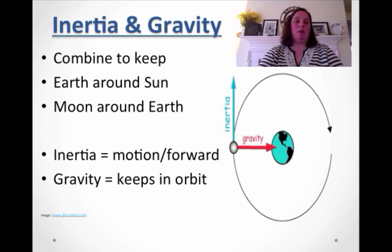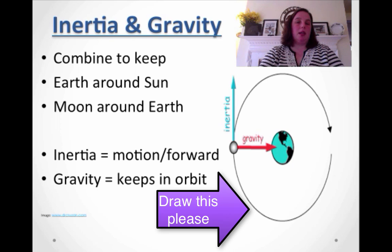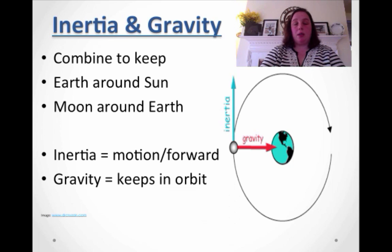So let's talk about inertia and gravity, and if you would for me, please draw this diagram. So inertia and gravity combine to keep the Earth around the sun, and it also combines to keep the moon around the Earth. Inertia, as you know, object in motion stays in motion, means to go forward, so that's the blue line you see here. And it's gravity that keeps it in orbit. So with those two forces, that's how you keep everything in our solar system revolving around each other.